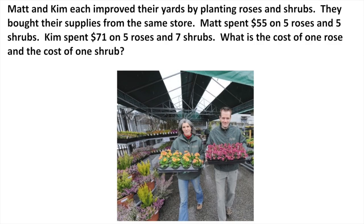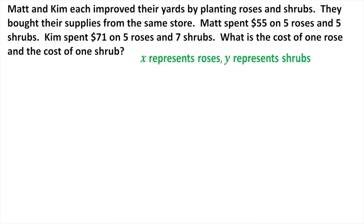So Matt and Kim each improved their yards by planting roses and shrubs. They bought their supplies from the same store, meaning they're the same cost per item. Matt spent $55 on 5 roses and 5 shrubs. Kim spent $71 on 5 roses and 7 shrubs. What is the cost of 1 rose and 1 shrub? We can create equations here. I'm just going to say that x equals roses, y equals shrubs. You can choose a different variable if you'd like. Whatever letter you want is good.